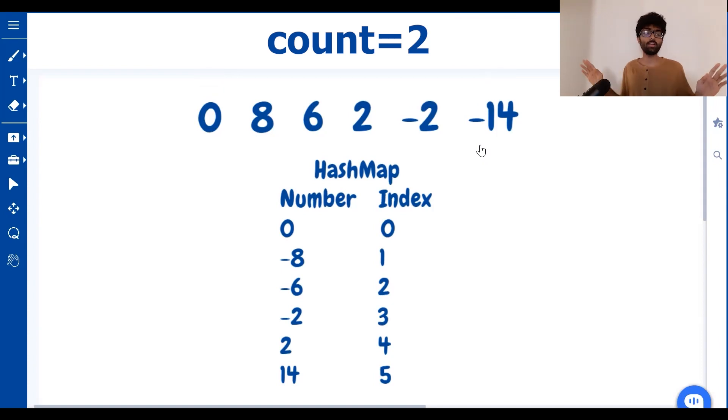Now we've considered every pair with 0 as its first number. Now we move on to 8. 8 and 6 gives us 14 which is in our hash map. Count goes up by 1. 8 and 2, 8 and minus 2 irrelevant. 8 and minus 14 gives us minus 6. Again it is in our hash map so our count goes up.